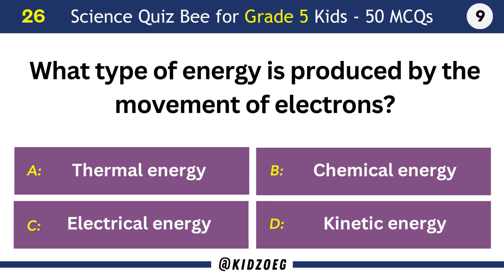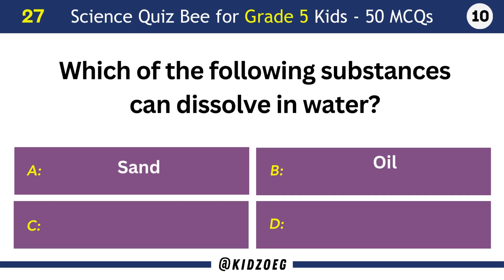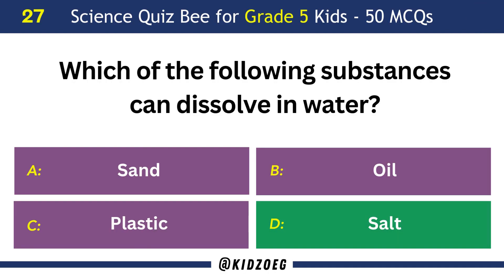What type of energy is produced by the movement of electrons? Electrical energy. Which of the following substances can dissolve in water? Salt.